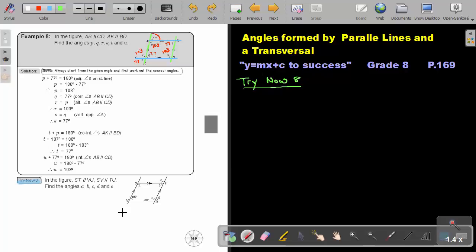Try Now 8. Now, in the figure, okay, and we're going to highlight this again. ST is parallel to VU. It's parallel to this one. And then, okay, this is actually SV and TU.